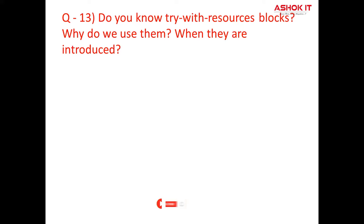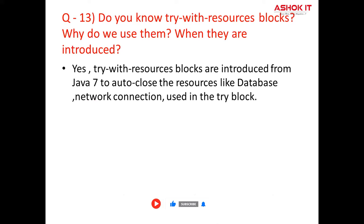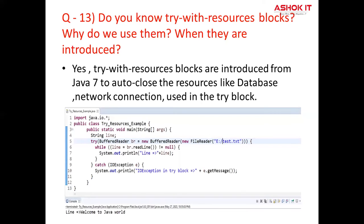Question number thirteen: Do you know try-with-resources blocks? Why do we use them and when were they introduced? Try-with-resources was introduced from Java 7. It is used to close resources like files, IO streams, database connections, and network connections which are used in the try block. You need not close the resources explicitly in your code — try-with-resources implicitly closes all the resources used in the try block. The main benefit is that it avoids resource leaks that could happen if you don't close the resources properly after using them. If you observe this example, in the try block we use a resource that is a file.